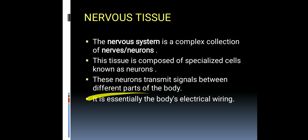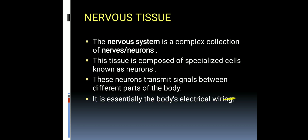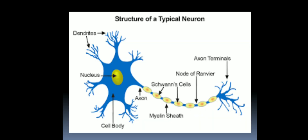Nervous tissue is just like the body's electrical wiring — it is present throughout the body from head to toe. A network of neurons is found throughout the body. Now, the neuron itself is an elongated, thin structure with three basic parts: dendron, cyton, and axon.